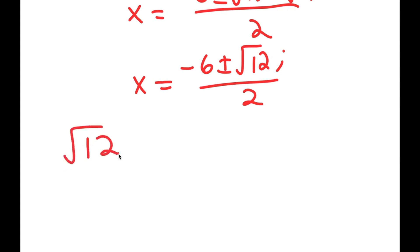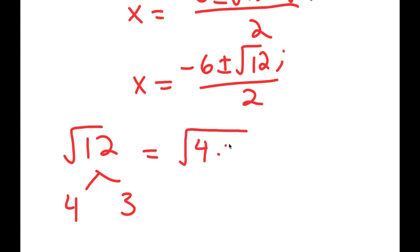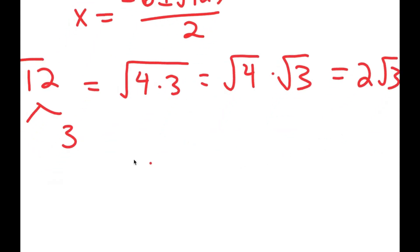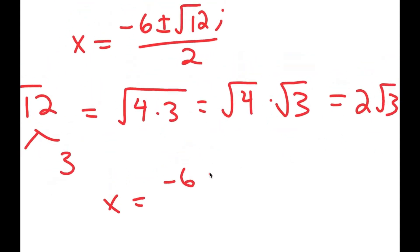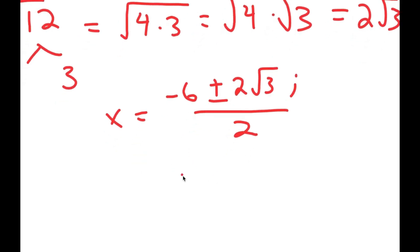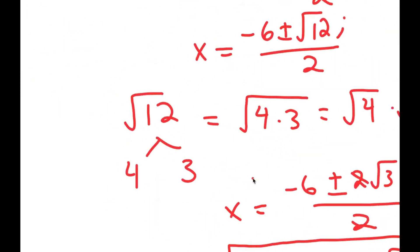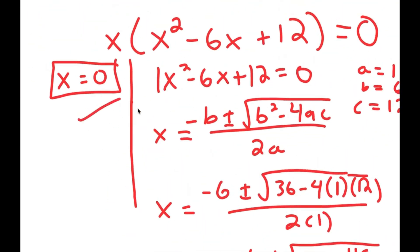The square root of 12 is the same as the square root of 4 times 3, which equals the square root of 4 times the square root of 3. The square root of 4 is 2, so this is 2 root 3. So x equals negative 6 plus or minus 2 root 3 i, over 2. Dividing each term by 2, I get x equals negative 3 plus or minus root 3 i. So my three solutions are x equals negative 3 plus root 3 i, x equals negative 3 minus root 3 i, and x equals 0.